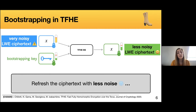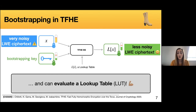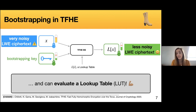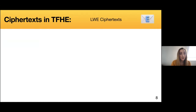The bootstrapping of TFHE is even more special, because at the same time that it reduces the noise, it's also able to evaluate a lookup table. So the result is not only the same encryption of the same message with less noise, but an encryption of L of X, where L of X is the position corresponding to X inside the lookup table. In the rest of the slides, we're going to often call this technique PBS for programmable bootstrapping.